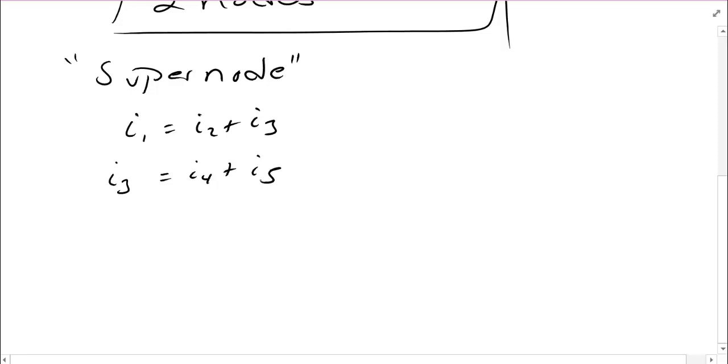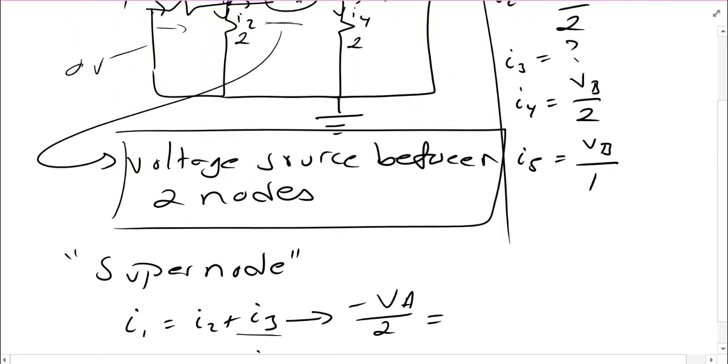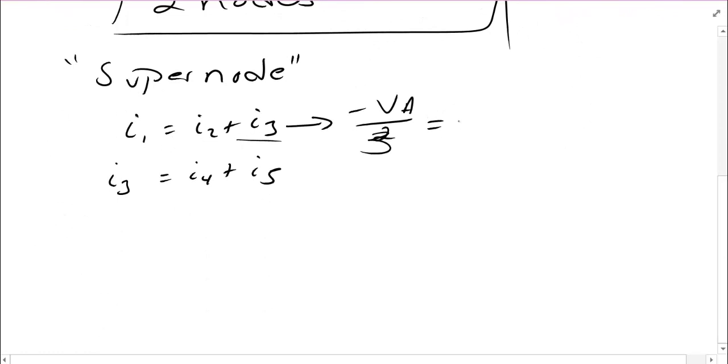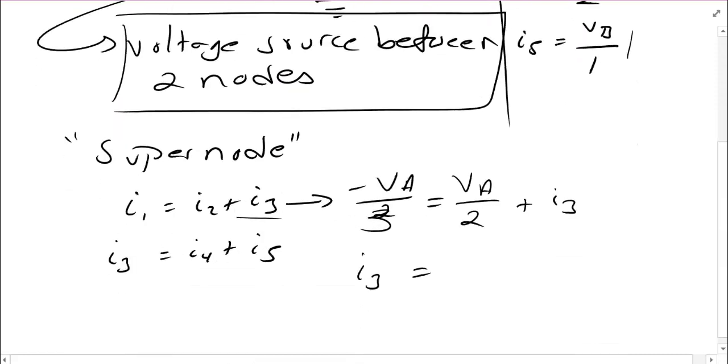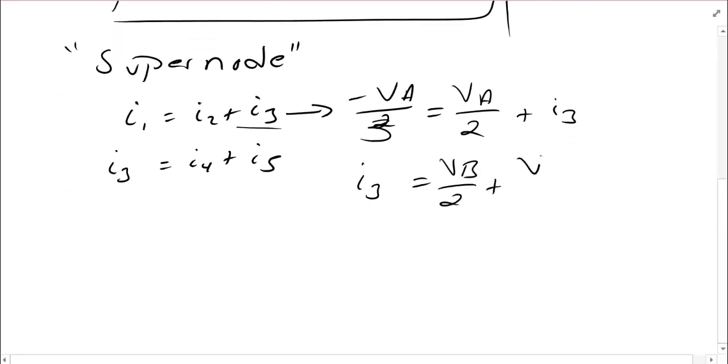Now, I'm going to substitute back in my nodal voltages. This is the same as I was doing before. The only thing I can't do is deal with I3. So this implies that negative VA over 3 is equal to VA over 2 plus I3. Similarly, I3 is equal to VB over 2 plus VB over 1. And here, I think we can see what the problem is. I have two equations and three unknowns. I don't have a way to solve this until I can come up with another equation.